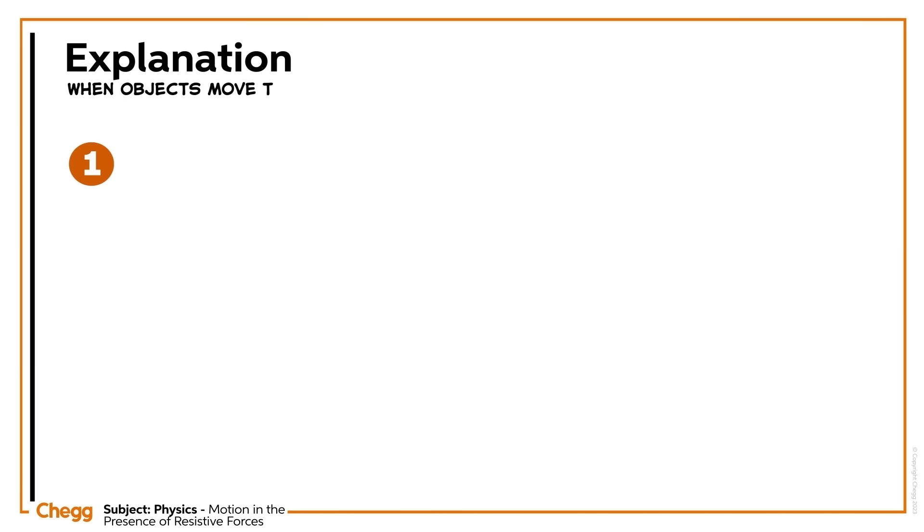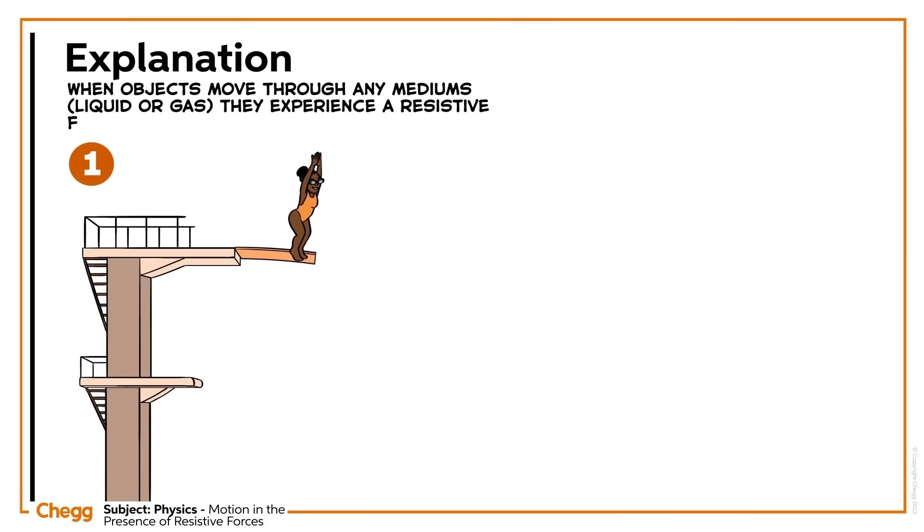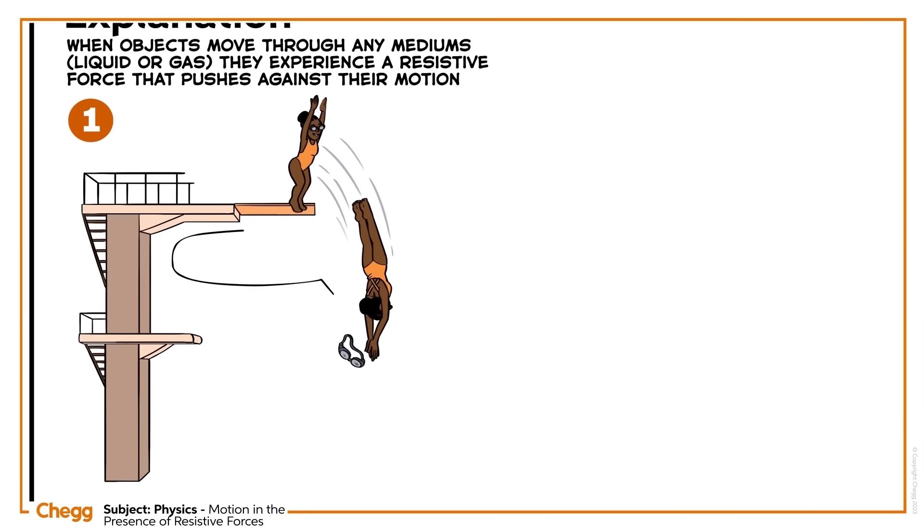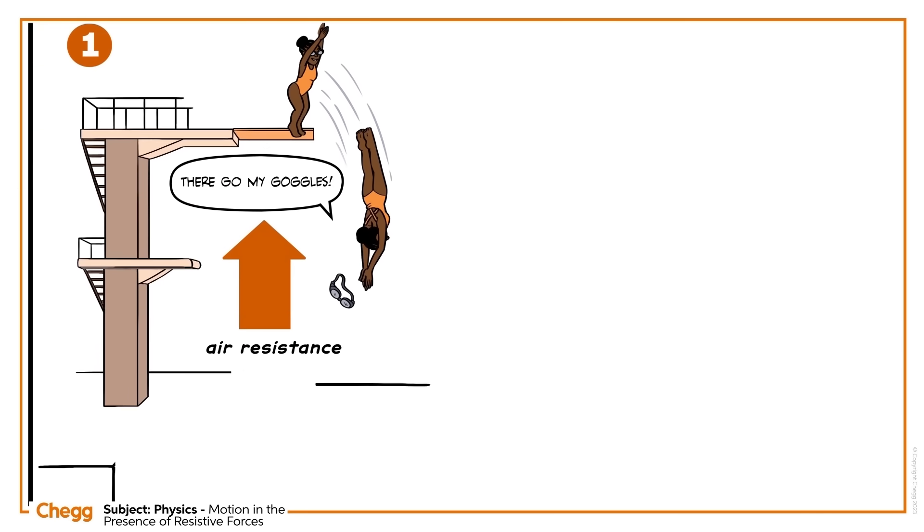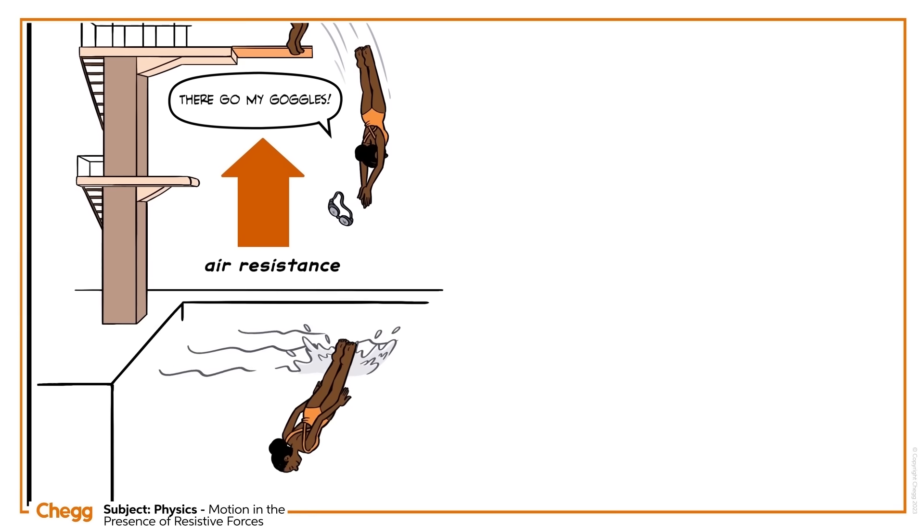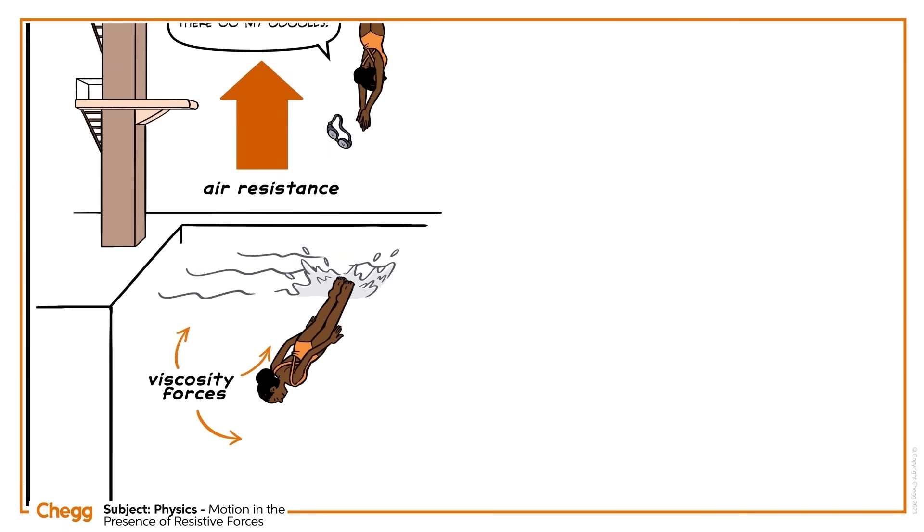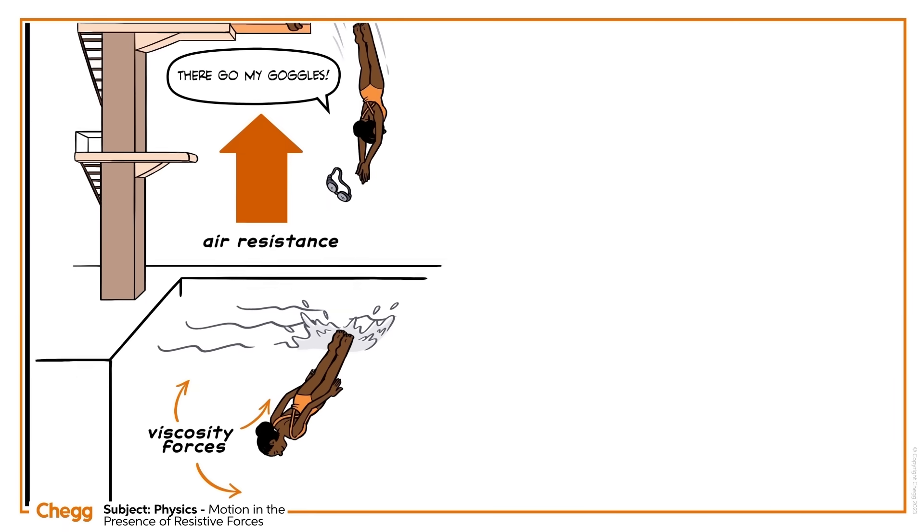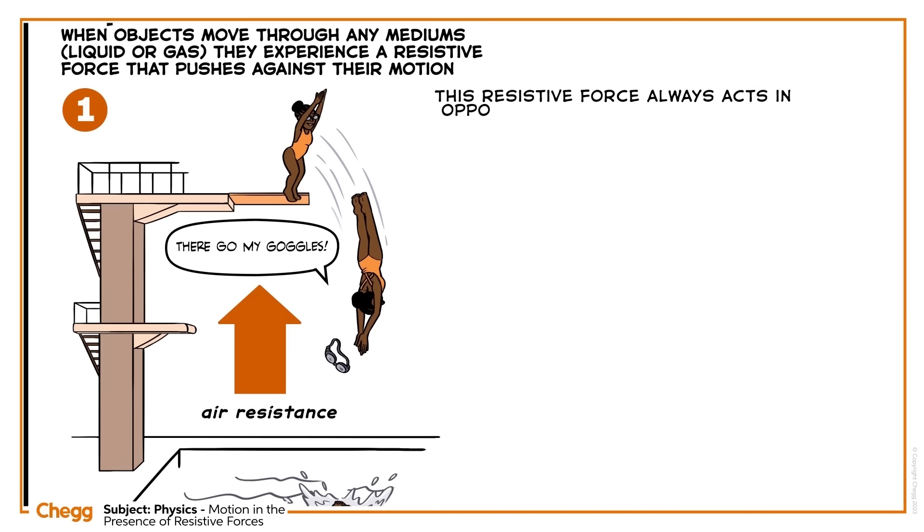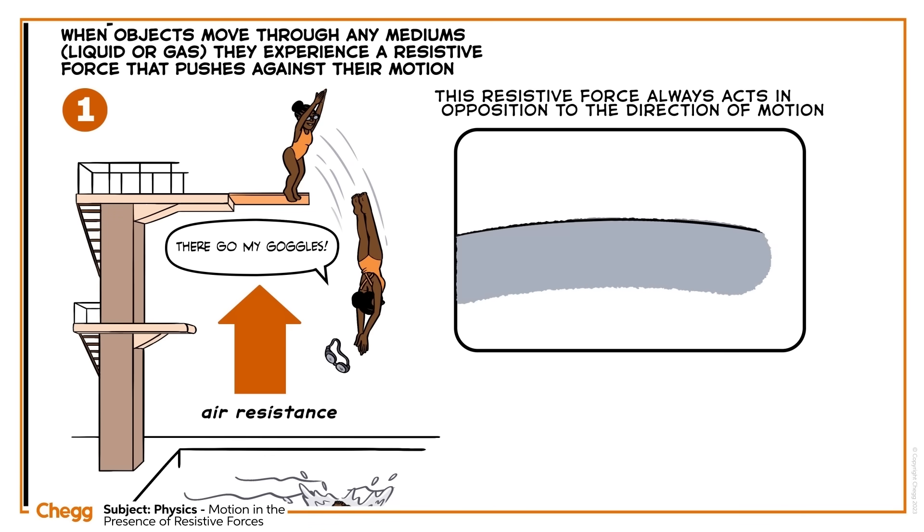When objects move through any medium, through any liquid or gas, they experience a resistive force that pushes against their motion. If the object is moving through air, there will be air resistance. If the object is moving through a liquid, then there will be viscosity forces that may resist the motion of the object. This resistive force always acts in opposition to the direction of motion, and as much as it's working against where you want to go, it's often super helpful.